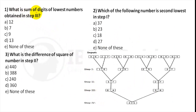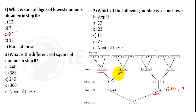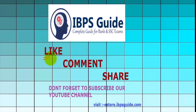Question 1: What is the sum of digits of the lowest number obtained in Step 3? The lowest number in Step 3 is 54, so 5 plus 4 = 9 — option C. Question 2: Which number is second lowest in Step 1? The lowest is 18, so second lowest is 19 — option E, none of these. Question 3: What is the difference of squares of the numbers in Step 2? 17 squared and 27 squared — their difference is 44. Hope you liked this video. Do like, comment if you have any doubt, share with your friends, and don't forget to subscribe. Thank you!